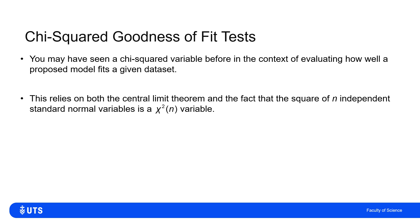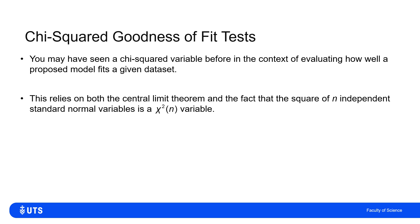But at its core is the central limit theorem and the fact that squaring standard normals and summing them gives chi-squared variables. It isn't instantly obvious why that's the case.